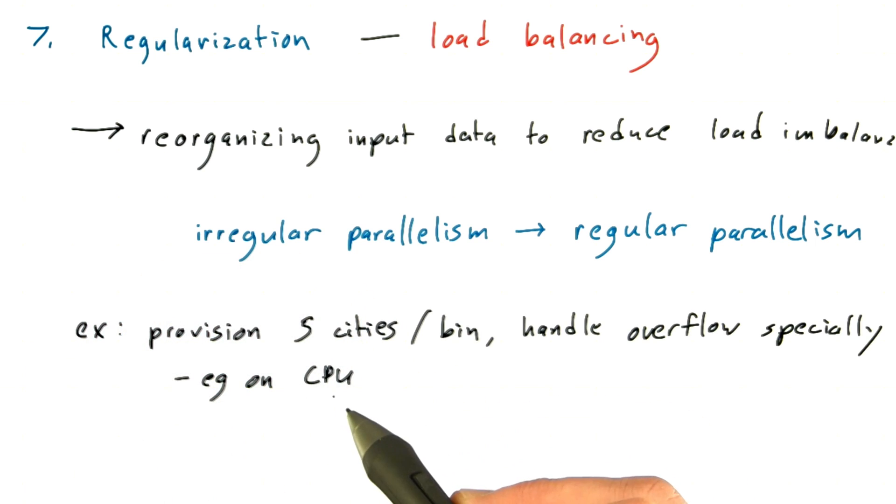For example, you might handle the cities or grid cells that overflow on the CPU. Or you might use a different kernel that implements a different algorithm, such as sorting the cities by longitude or latitude.